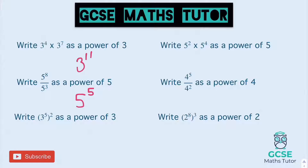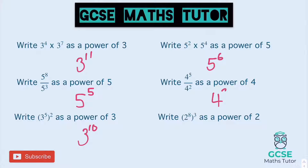And the next one: write three to the power of five squared as a power of three — so we multiply the powers — three to the power of ten. On to the right-hand side: five squared times five to the power of four, we're going to add the powers — five to the power of six. Onto the one below, we're dividing, so subtract the powers — we get four to the power of three.